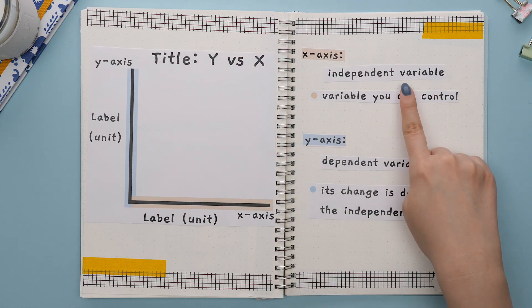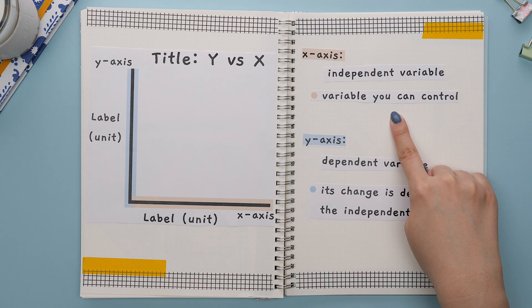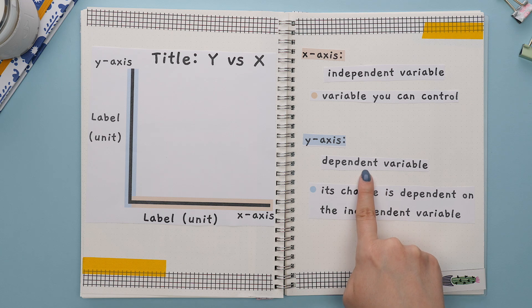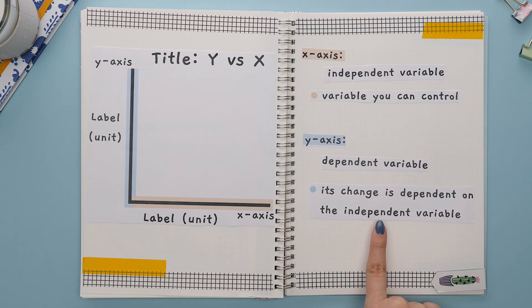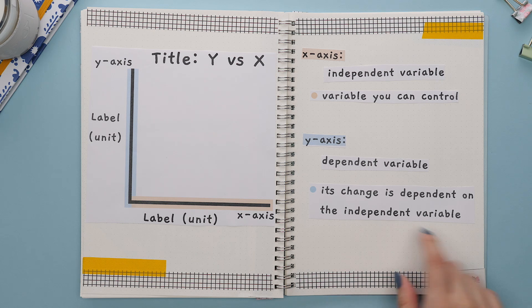The x-axis is known as the independent variable because this is the variable you are able to control in an experiment. While the y-axis is known as the dependent variable because its change is dependent on the independent variable.